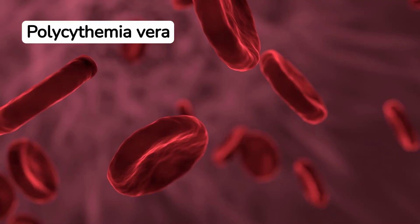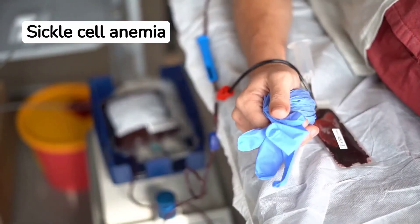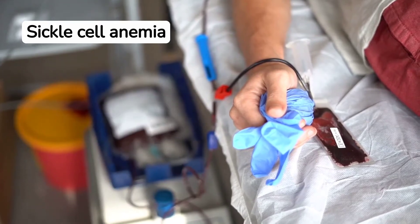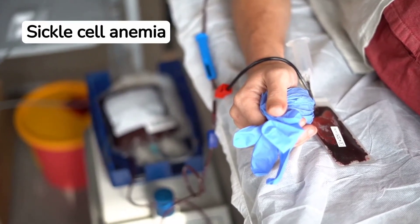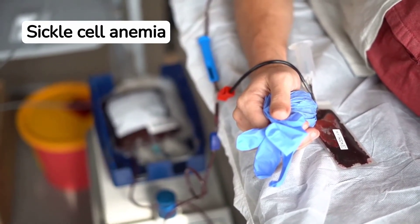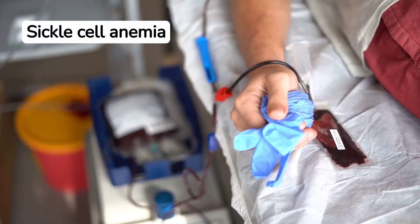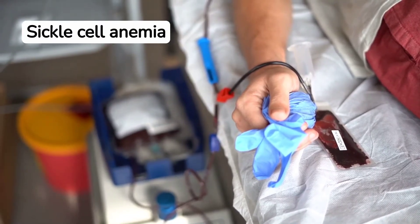Polycythemia vera is a bone marrow disease in which there is an uncontrolled increase in the production of red blood cells. Sickle cell anemia is a genetic disorder that causes the formation of abnormal red blood cells, which increases the level of hemoglobin in the blood in order to maintain normal flow of oxygen.